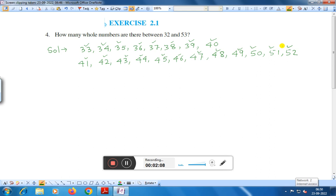Therefore we can say that there are 20 whole numbers. Right? Therefore the answer will be there are 20 whole numbers between 32 and 53.